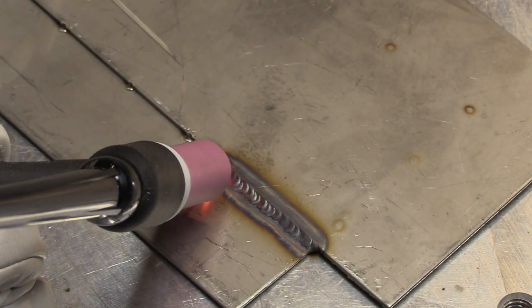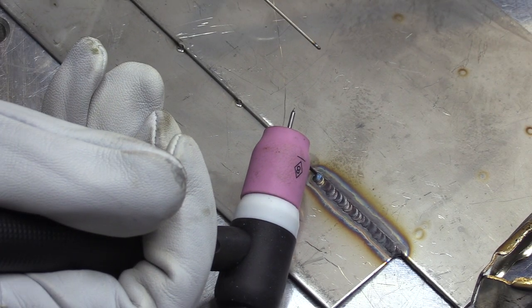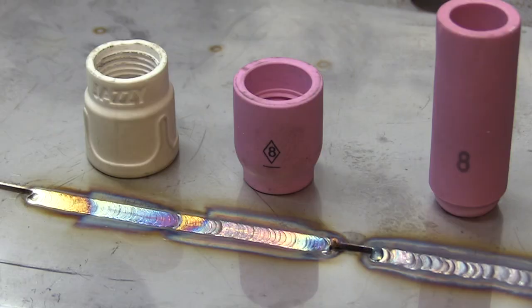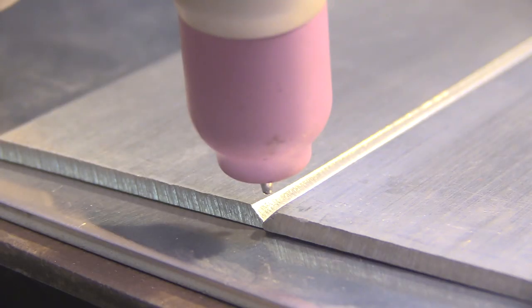This is a number eight collet body here with a half inch stick out. Didn't do so well. Same stick out with the number eight stubby gas lens did a lot better and then you can see when I added the jazzy tint to it, it did even better.